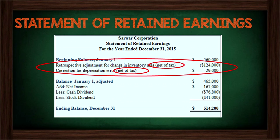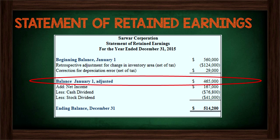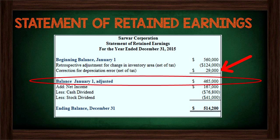After that, the statement becomes very simplistic. The third step is to calculate our adjusted beginning balance by taking our beginning balance of $560,000 and then adding and subtracting any changes, errors, and retrospective adjustments from step two. To get our adjusted balance of $465,000, we take our beginning balance of $560,000, subtract the $124,000 loss from the retrospective adjustment for inventory, and then add the $29,000 correction for the depreciation error.